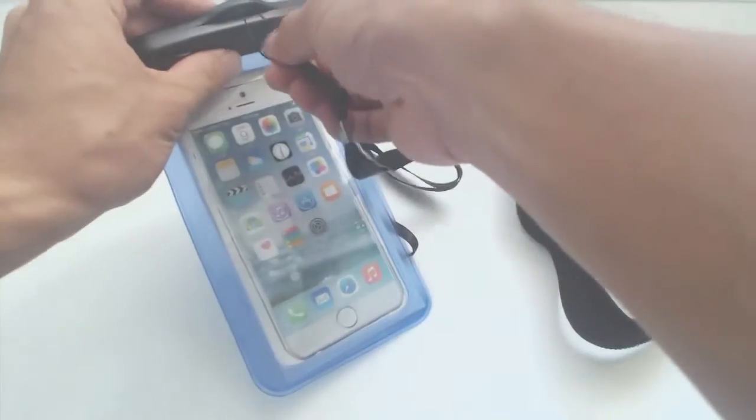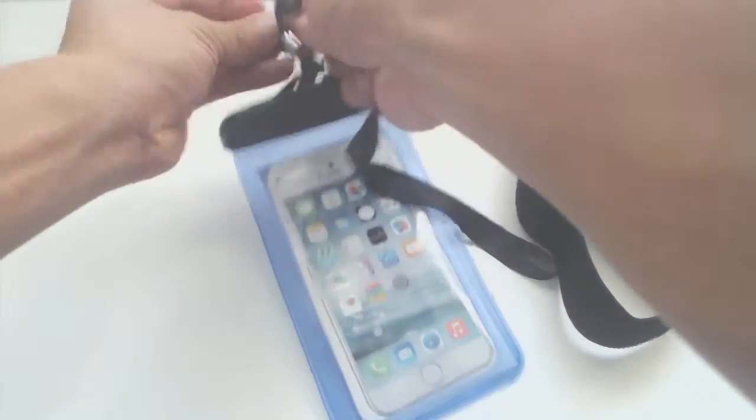To attach the wrist strap, feed the small string loop through the hole at the top of the case and then slip the wrist strap through it and pull tight.